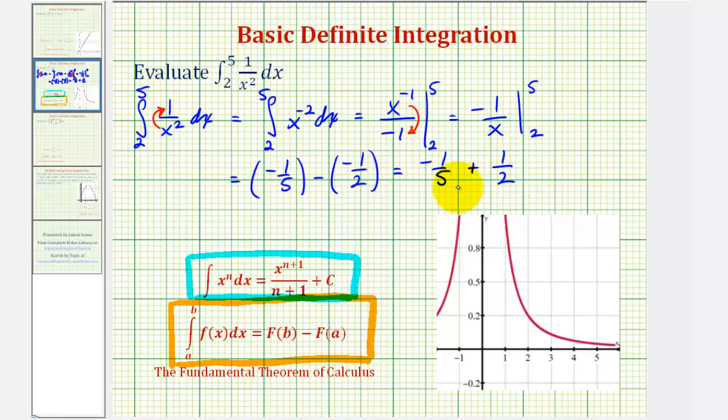Well, to add these two fractions, we have to obtain a common denominator, which would be ten. We'll multiply this first fraction by two over two, the second fraction by five over five. So we have negative two-tenths plus five-tenths, which would be three-tenths. Which is the value of the definite integral.